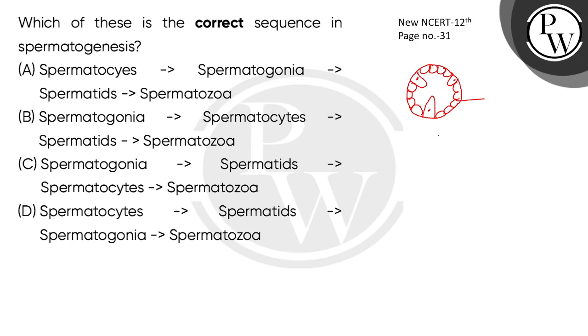In the germinal epithelium, mitotic division takes place — this is the multiplication phase of spermatogenesis. The male germ cells here are called spermatogonia, the sperm mother cells.